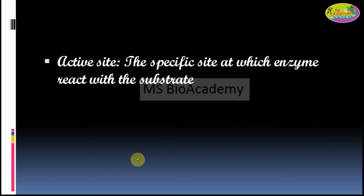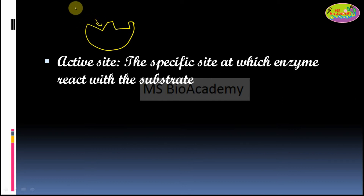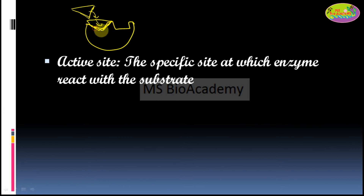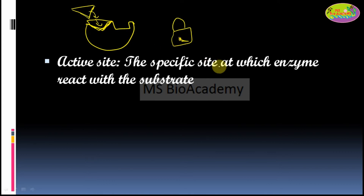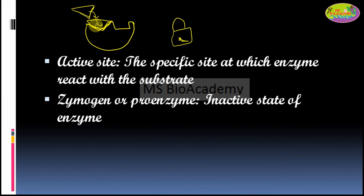The active site is the specific site at which the enzyme reacts with the substrate. Imagine the shape of an enzyme — the substrate comes and binds to this particular site only. The amino acids present at that site link with the substrate molecule. This is like a lock-and-key model: one particular key fits into one particular lock. This site where the enzyme reacts with the substrate is called the active site.